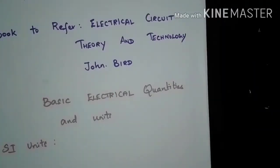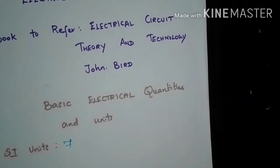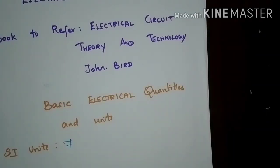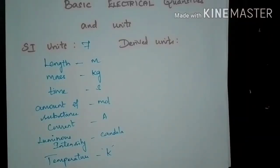In this video, let us see some basic definitions and units. First, let us see about SI units. The basic SI units are 7: length, mass, time, amount of substance, current, temperature, and luminous intensity. Length is measured in meters, mass in kilograms, time in seconds, amount of substance in moles, current in amperes, luminous intensity in candelas, and temperature in Kelvin. These are the basic 7 SI system of units.